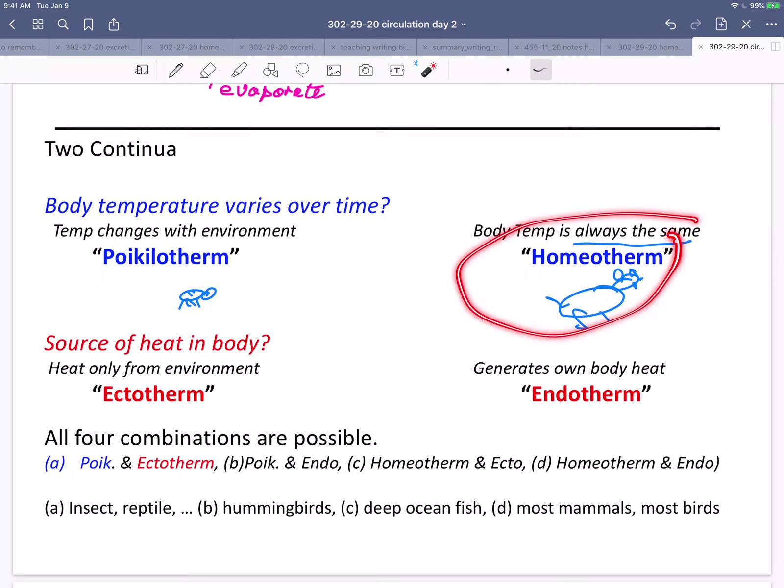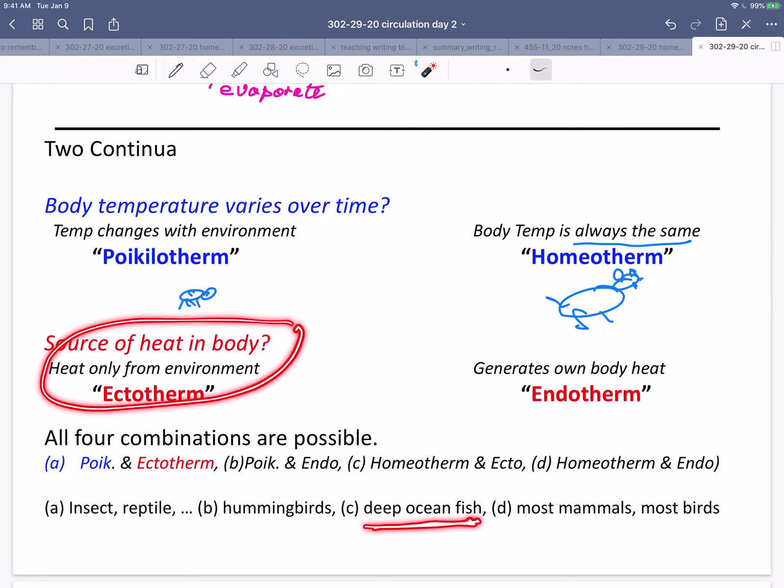Animals can be homeotherms and ectotherms. That one sounds a little surprising. Wait a minute. How can you keep your temperature always the same if you get heat only from the environment? And good examples of these are deep ocean fish. If you're a deep ocean fish, the temperature is always somewhere around four or five degrees centigrade. It never changes. And so you get your heat only from the environment, but your body temperature is always the same, down around four or five degrees centigrade.